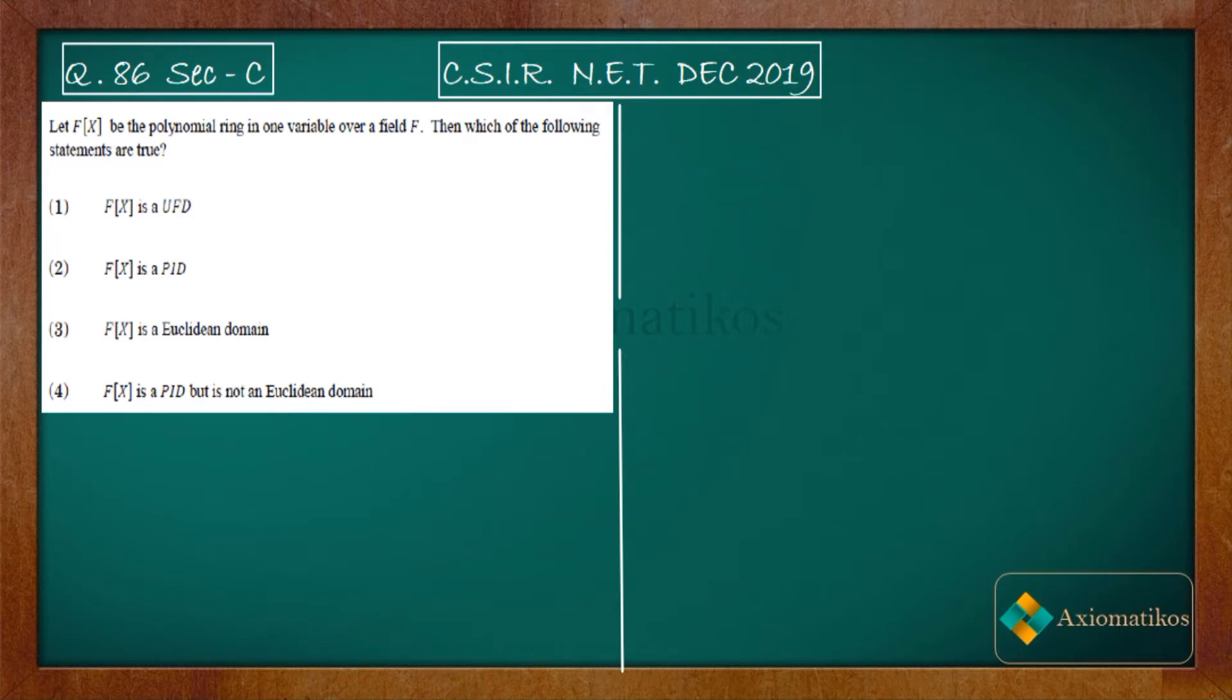Hello dear students, welcome to Axiomatics course. This video is part of the solution series for CSIR NET December 2019, and we are doing Problem 86 from Part C of your paper. It's a problem from abstract algebra. Let us have a look. Let f(x) be the polynomial ring in one variable over a field f.